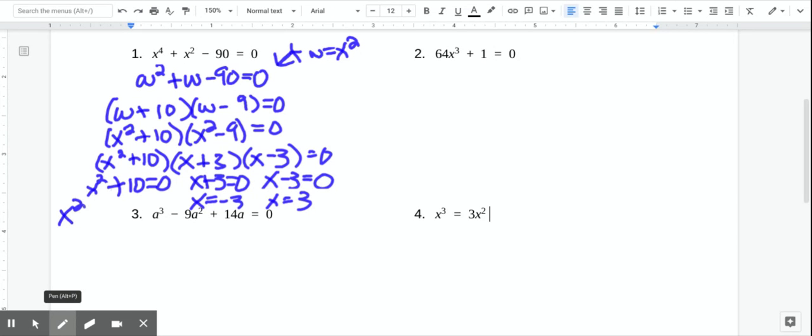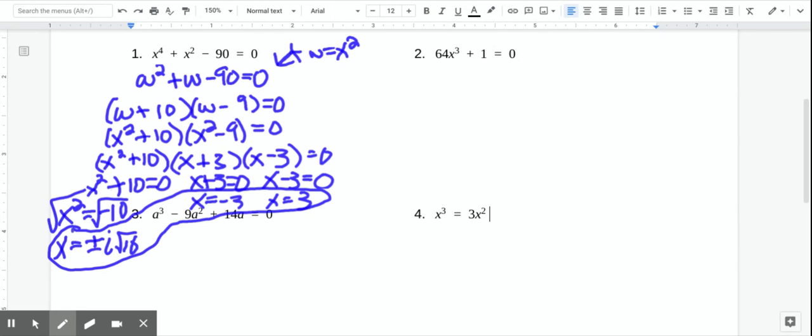when we go to solve it, we get X squared equals negative 10. And then we're going to take the square root of both sides. Remember, we need plus or minus. And the square root of negative 10. Remember, we can do that. It's going to be the square root of 10. And then the square root of negative 1 is I. So two of those solutions are imaginary. And two of them are real. So we have 3, negative 3, and then plus or minus I root 10.